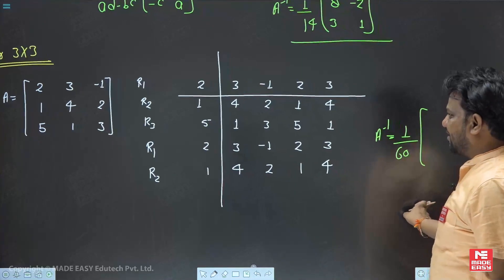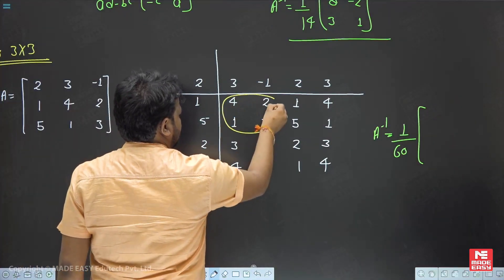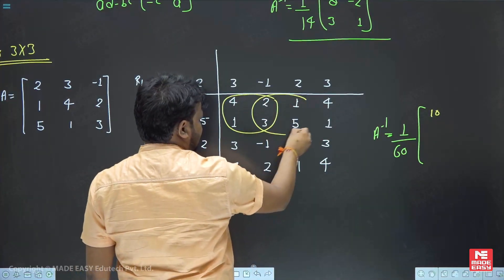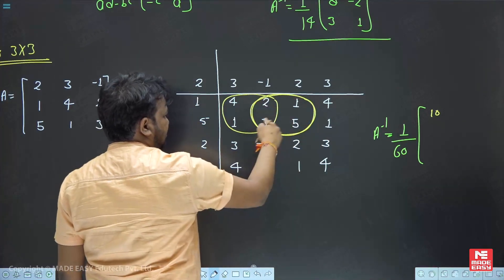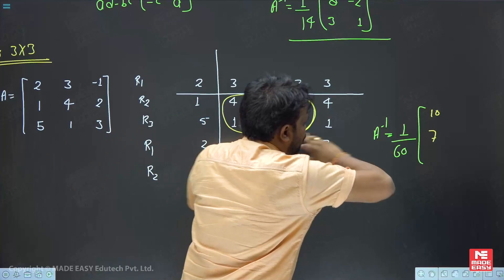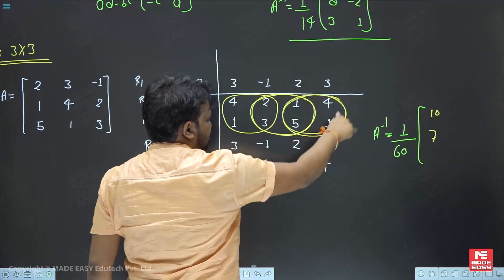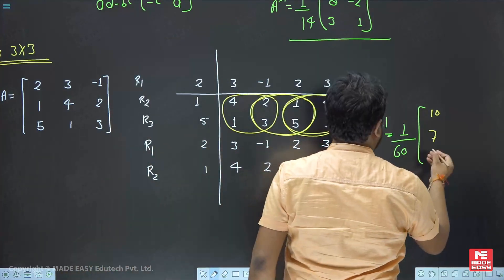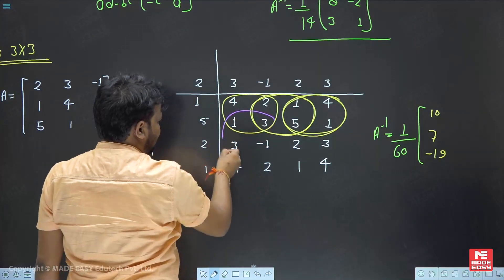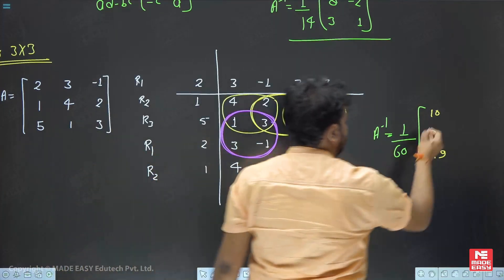Now we write A inverse directly. We compute values row-wise and write them column-wise. First determinant value: 4×3 = 12, minus 2 = 10. Next value: 5×2 = 10, minus 3 = 7; write 7. Next: 1 minus 20 = minus 19. Next: minus 1 minus 9 = minus 10; write minus 10.